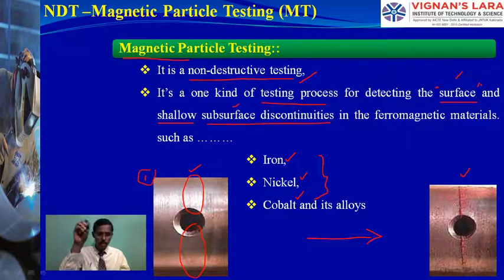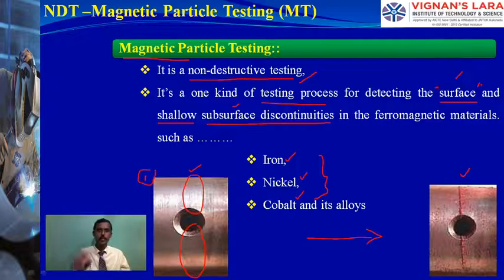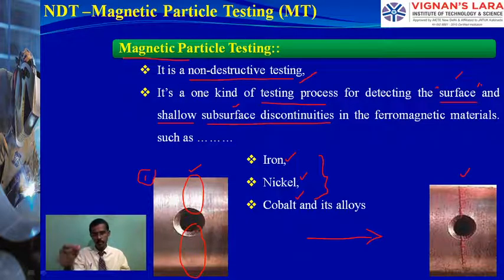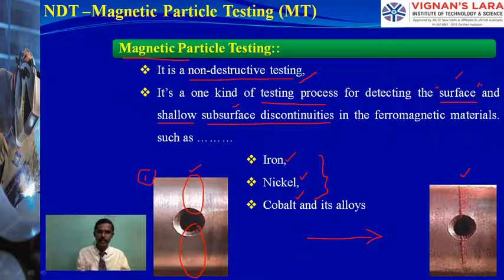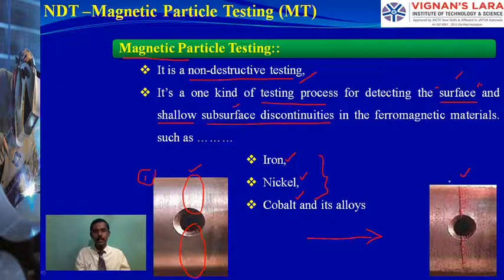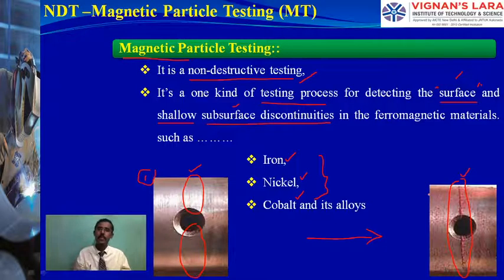Looking at two images: in the first, when we view the specimen with the naked eye, the crack is not visible — yet the crack is present in that zone. After performing magnetic particle inspection, magnetic particles are applied over the specimen and a magnetic field is created. The particles accumulate along the line where the defect is, where magnetic field leakage occurs, making the crack easily visible. It is a very simple method.